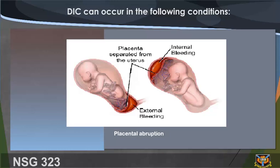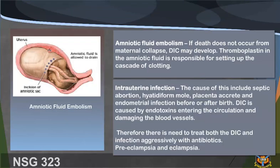DIC can occur in the following conditions: placenta separated from the uterus causing external and internal bleeding. Amniotic fluid embolism: if death does not occur from maternal collapse, DIC may develop. Thromboplastin in the amniotic fluid is responsible for setting up the cascade of clotting. Intrauterine infection — causes include septic abortion, hydatidiform mole, placenta arcuata, and endometrial infection before or after birth. DIC is caused by endotoxins entering the circulation and damaging blood vessels; there is need to treat both the DIC and infection aggressively with antibiotics.